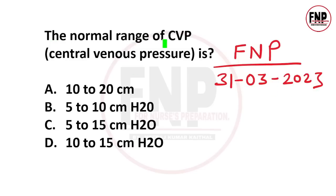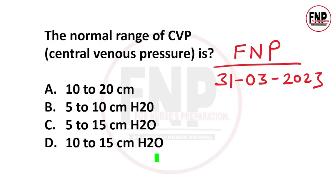The normal range of central venous pressure is — normal central venous pressure कितना होता है, यह आपको बताना है. Options: 10 to 20 cm, 5 to 10 cm H2O, 5 to 15 cm H2O, 10 to 15 cm H2O.